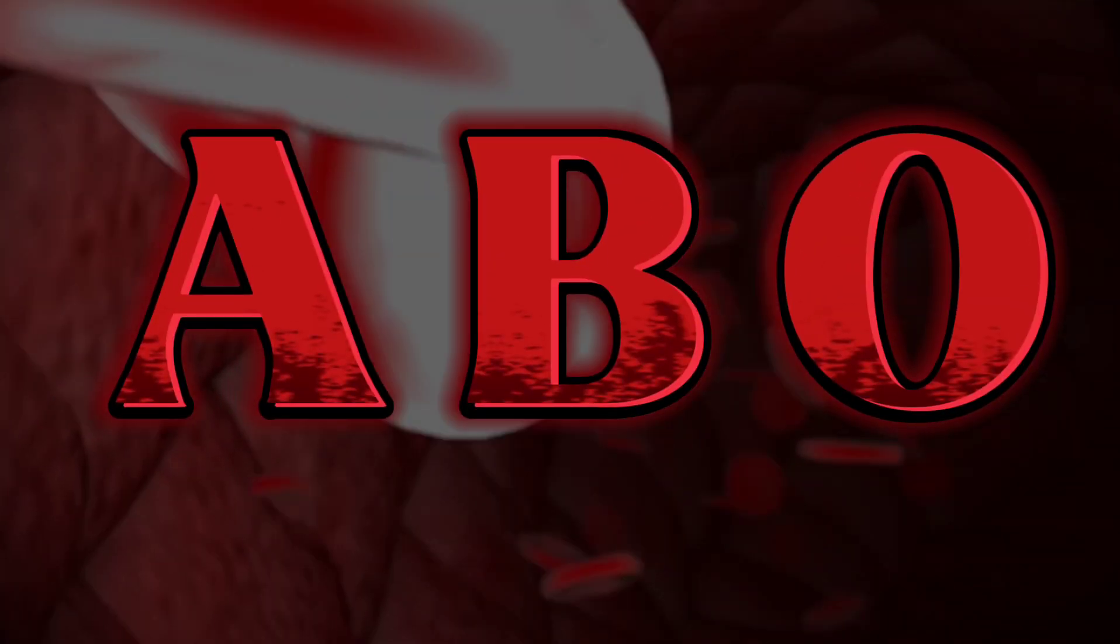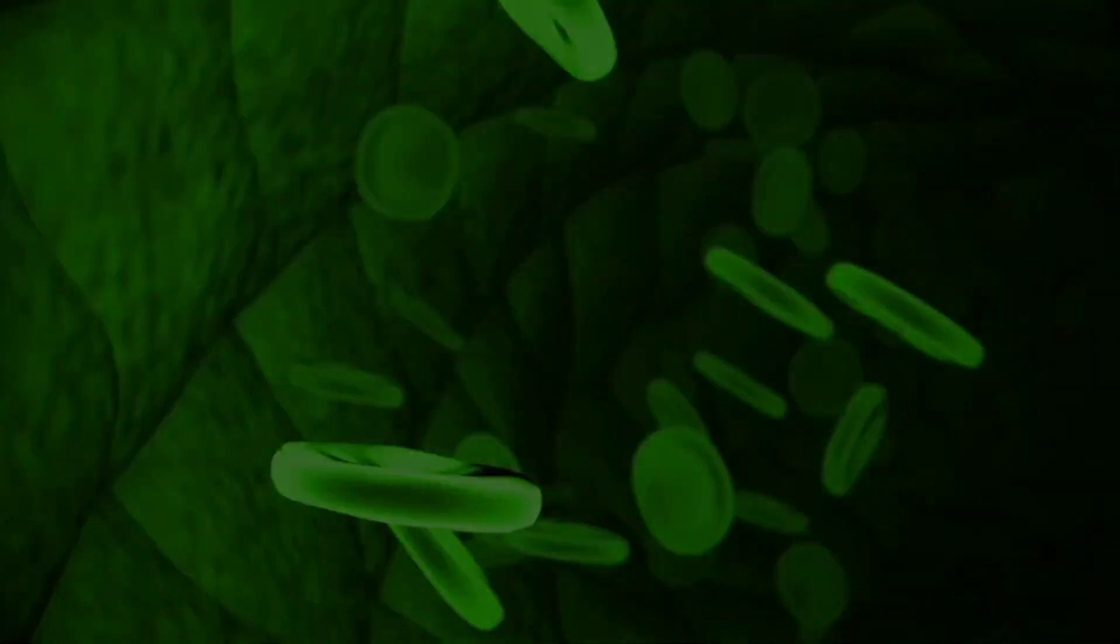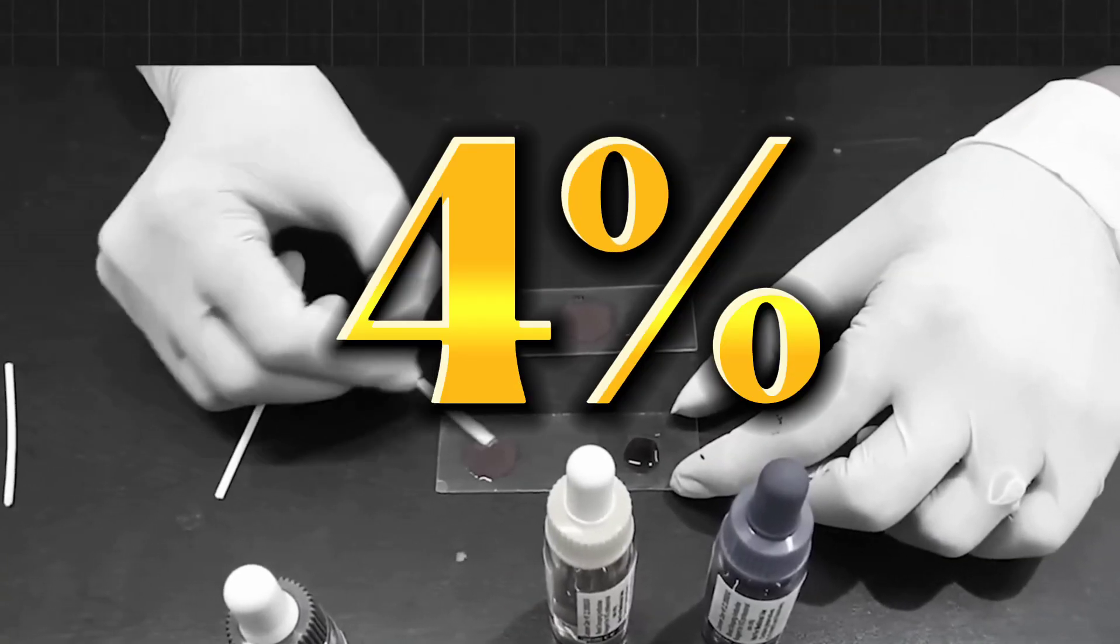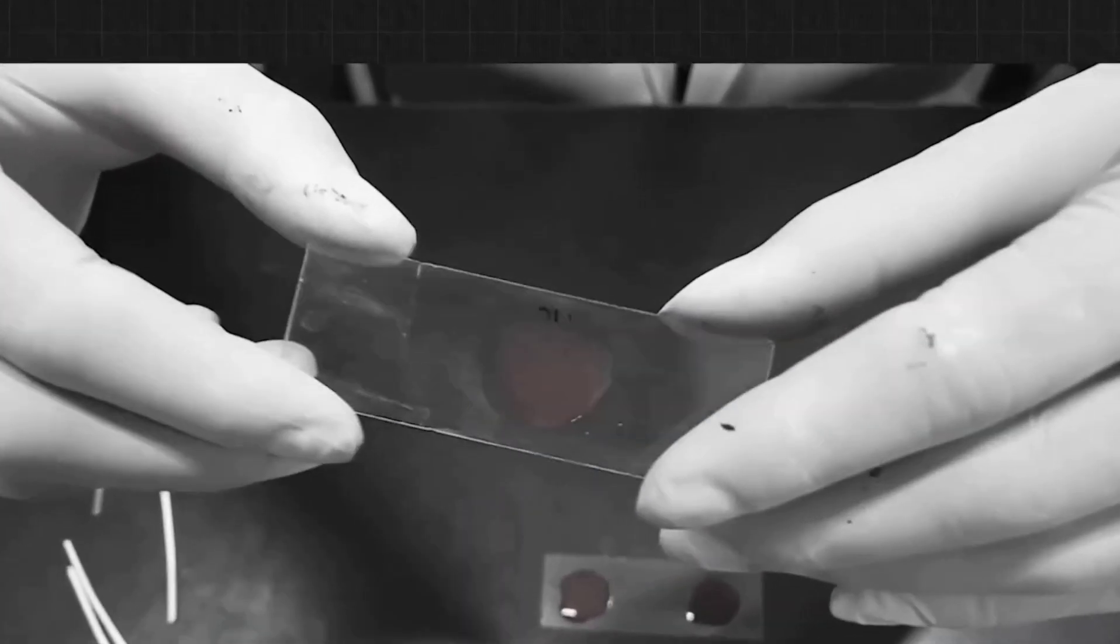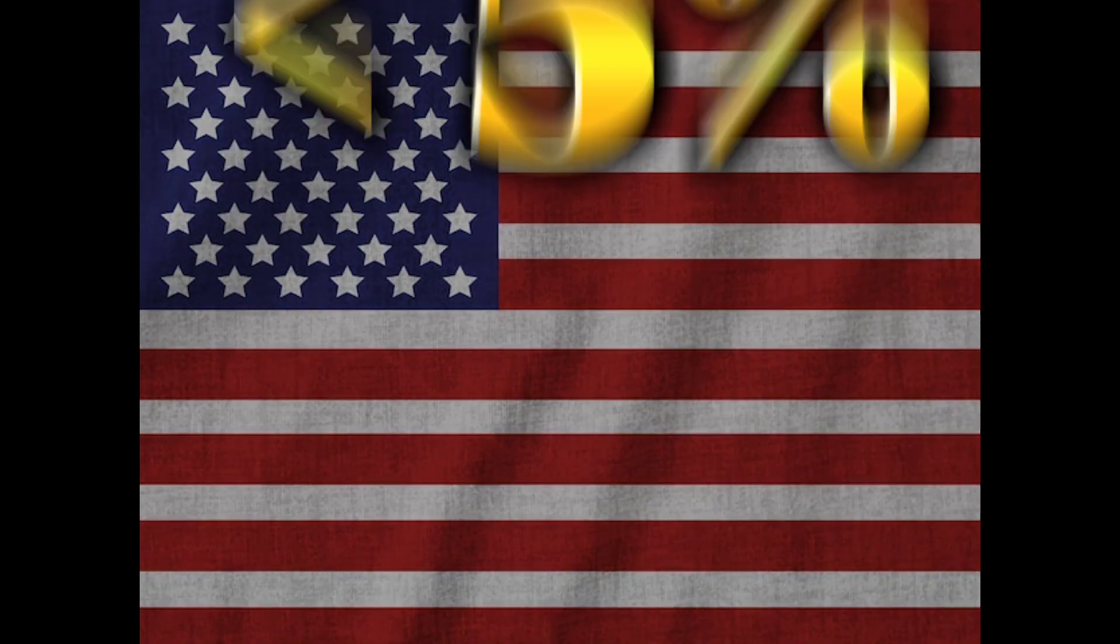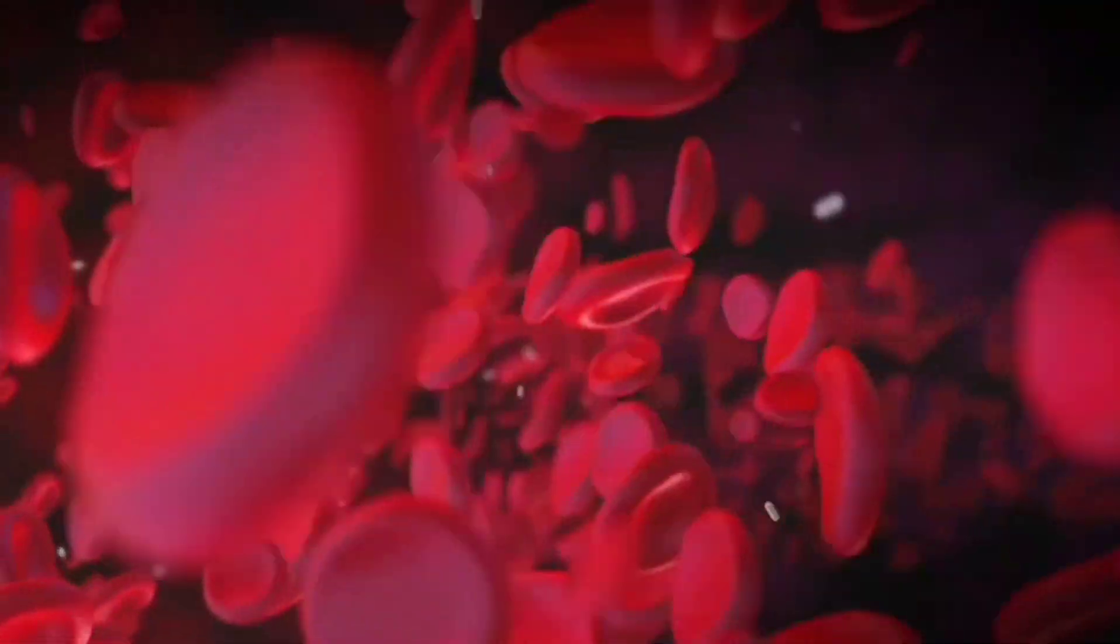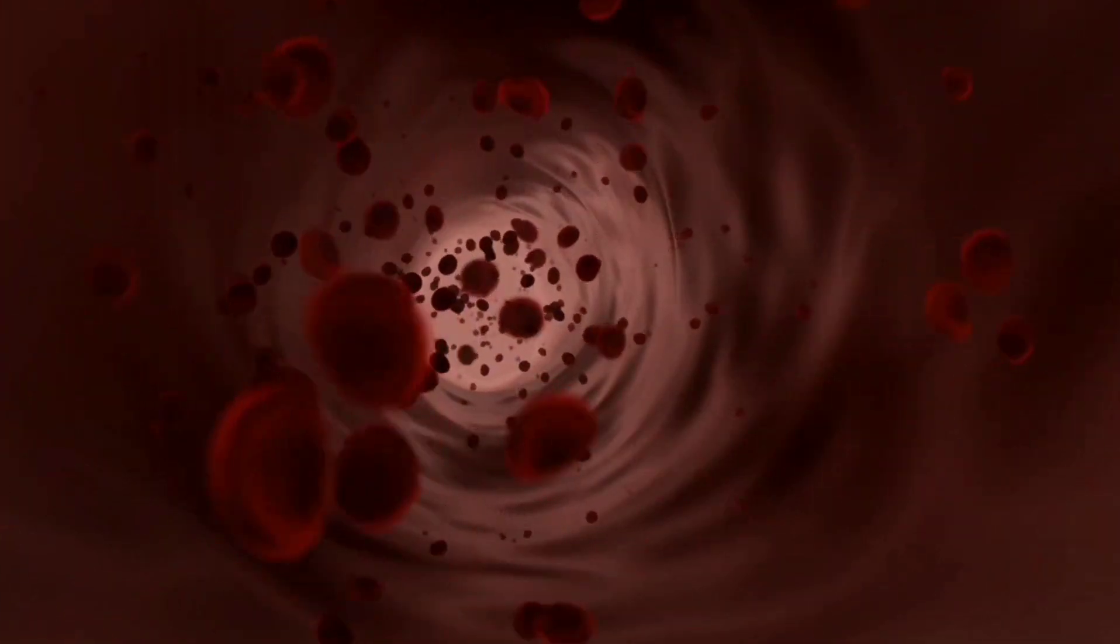Fact 1. AB is the rarest ABO blood type in the world. Only about 4% of the global population has AB blood. It's even rarer in some countries. In the United States, it's less than 5%. That means if you have AB blood, you're part of a very small group. It's like being in a club with only a few members.